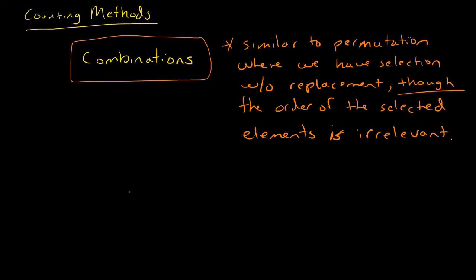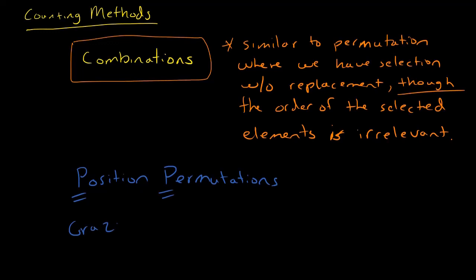A mnemonic to help remember this — something I tell my students all the time: what's a permutation and what's a combination? Position matters for permutations. And then we have those crazy combinations where the order does not matter. So P with P, C with C.